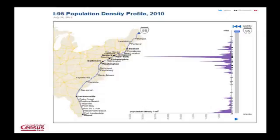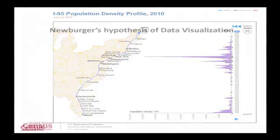We have this population density profile of the I-95 corridor, and this is an animation. It's not really interactivity, but because it's animated it adds emotional content. You start in Miami, push the button, and you see a little dot move up the coast as it goes up I-95, showing within two miles on either side the population density at each point. This is a way of seeing the Northeast Corridor — seeing the big buildings, and then some places where there's no people. We're using whatever visualizations we can to make our data more accessible.